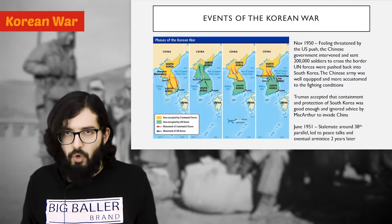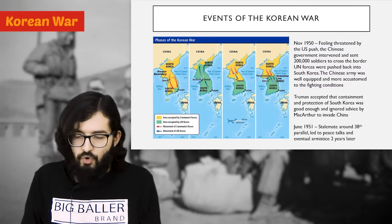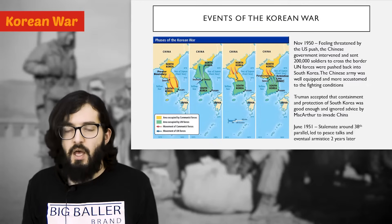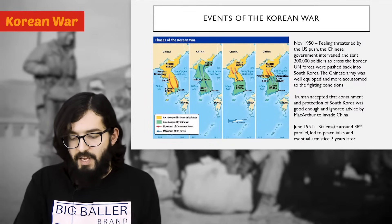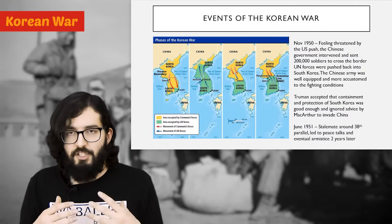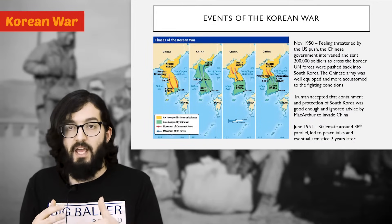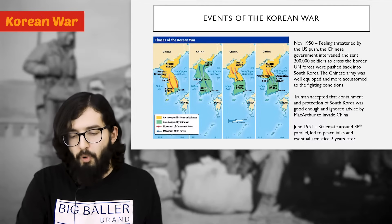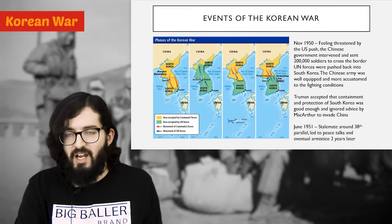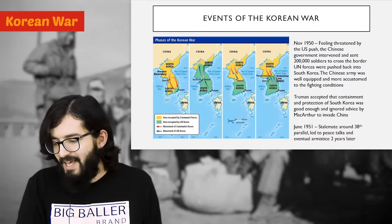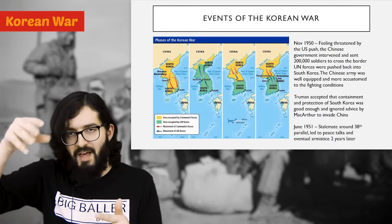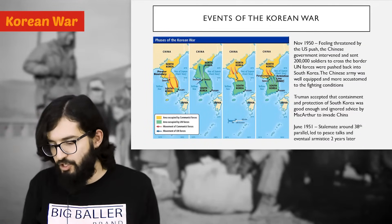MacArthur, however, believed they had to punish China and even publicly called for China to be nuked with an atom bomb. Truman effectively thought MacArthur had gone insane, sacked him, had him recalled home, and refused to follow his plan. Instead, US strategy reverted back to containment and settling for a return to the pre-war status quo. For the next few months there was a stalemate around the 38th Parallel, with neither side making major gains, and eventually both sides entered peace talks that took a couple of years to agree, resulting in an armistice.